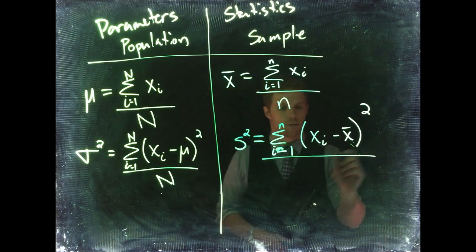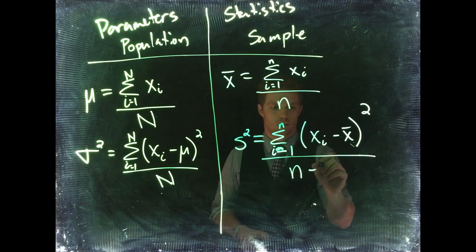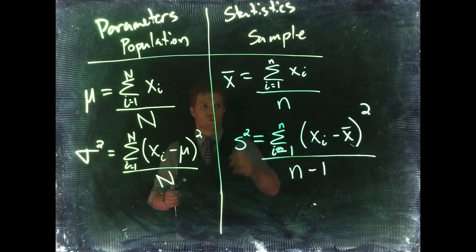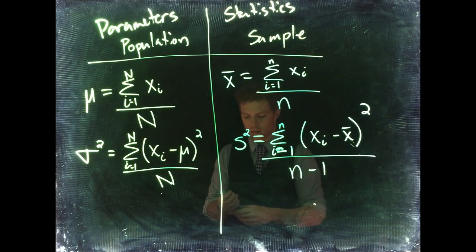Divide it by our sample size, and then we also have to subtract 1 from our sample size. So still we're trying to find the average distance from the mean.